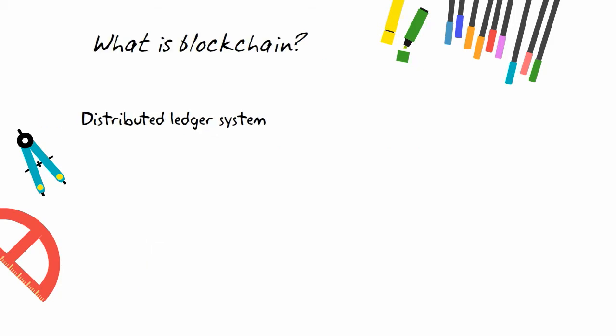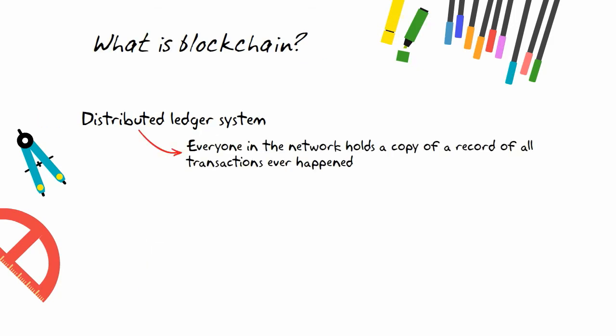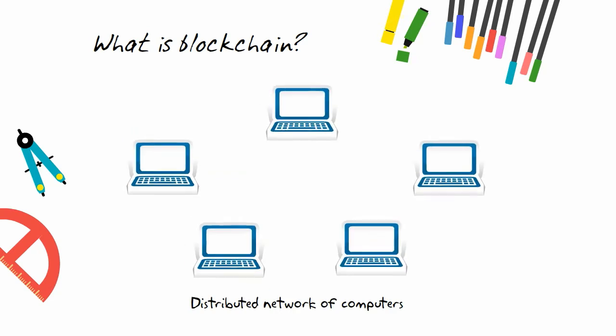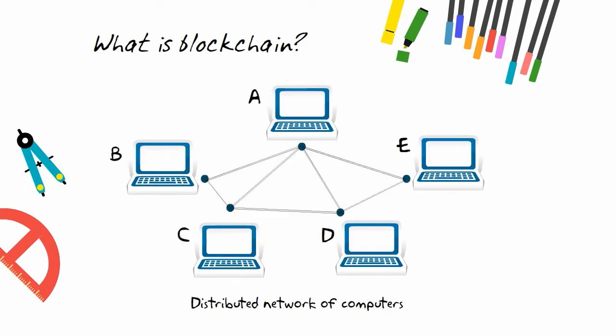Then why is it a distributed system? Each computer in the network holds a copy of the record. When a new transaction happens between A and B, it is validated and added to existing records in every computer in real time. Instead of going through a central authority who keeps track of things, every participant now holds a single version of truth.